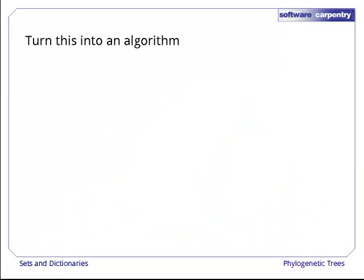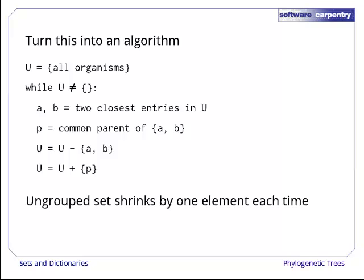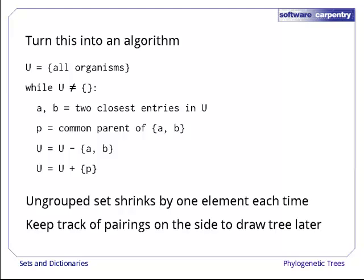Let's turn this into an algorithm. Initially, our universe U contains all the organisms we're interested in. While there are still organisms that haven't been connected to the tree, we find the two that are closest, calculate their common parent, remove the two we just paired up from the set, and insert the newly created parent. The set of ungrouped organisms shrinks by one each time, so this algorithm eventually terminates. We can keep track of the pairings on the side to reconstruct the tree when we're done.